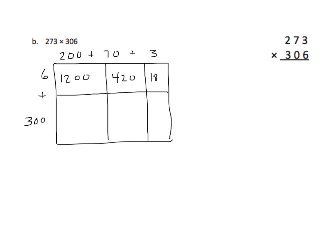Six times three is eighteen. Seventy times six is four hundred twenty. And six times two hundreds is one thousand two hundred. Three hundreds times three is nine hundred. And seventy times three hundred is twenty-one thousand. Notice that these numbers are similar to ones we worked with earlier. And here I have sixty ten-thousands, because three times two is six, and hundreds times hundreds makes ten-thousands. Now let's do our partial products. I have eight, three, six, and one — it should look familiar.